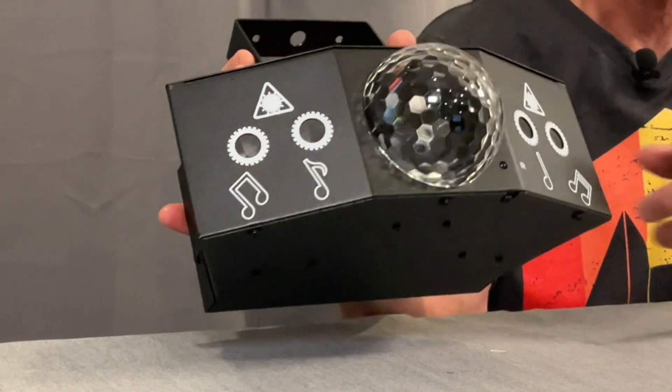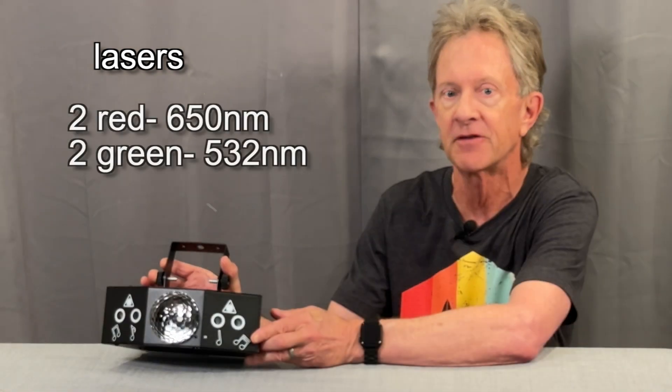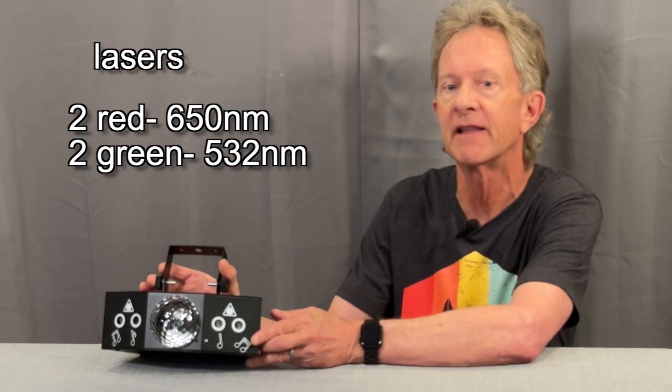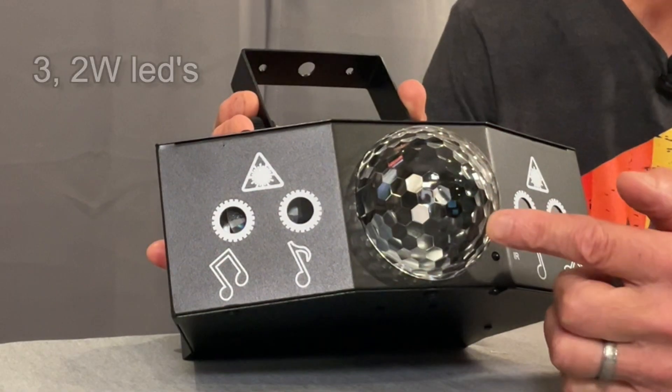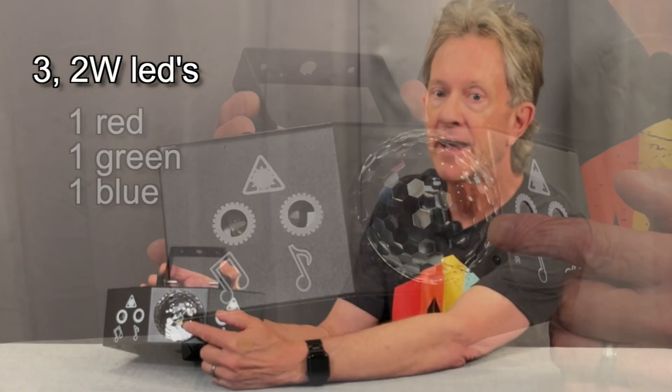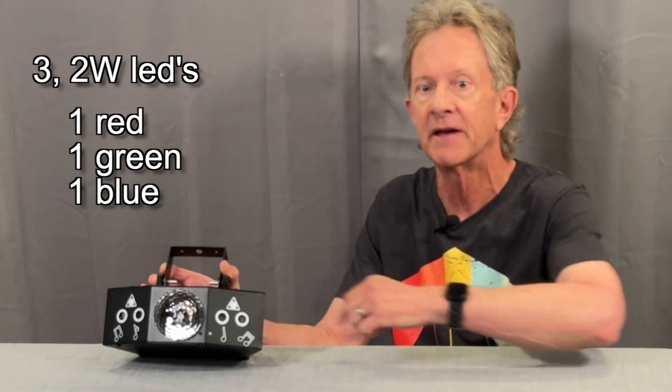On the front there's these four openings where the two green and two red lasers are emitted. And you'll see in a minute they're projected through moving lenses that produce different patterns. In the middle there's three two watt LEDs, a red, a green and a blue that rotate behind this plastic honeycomb lens or what the manufacturer calls its magic eye.